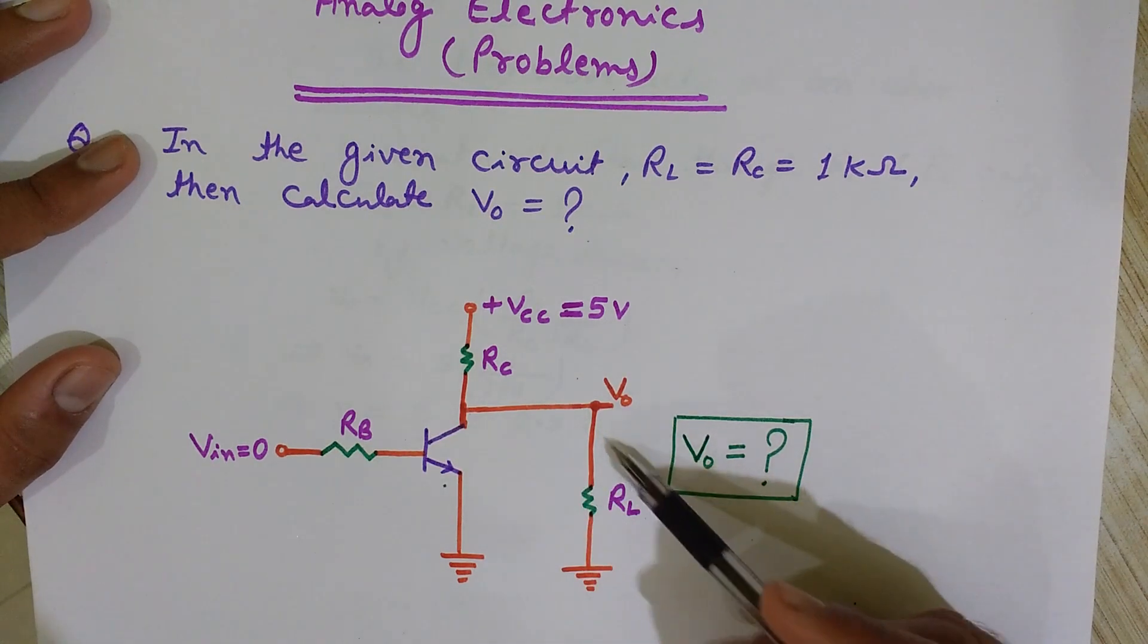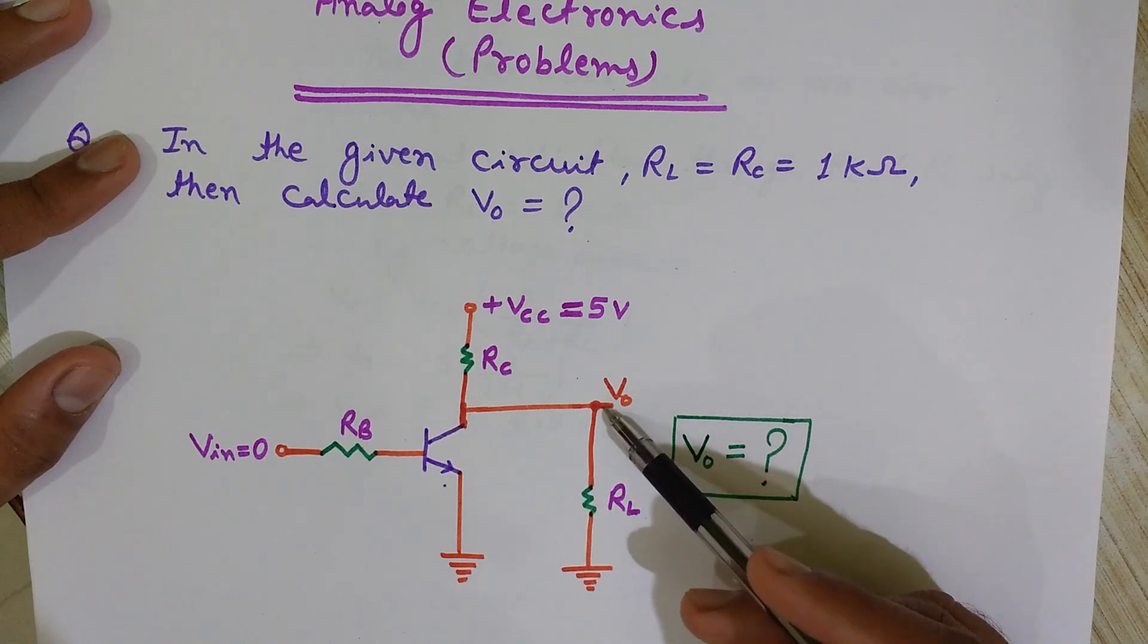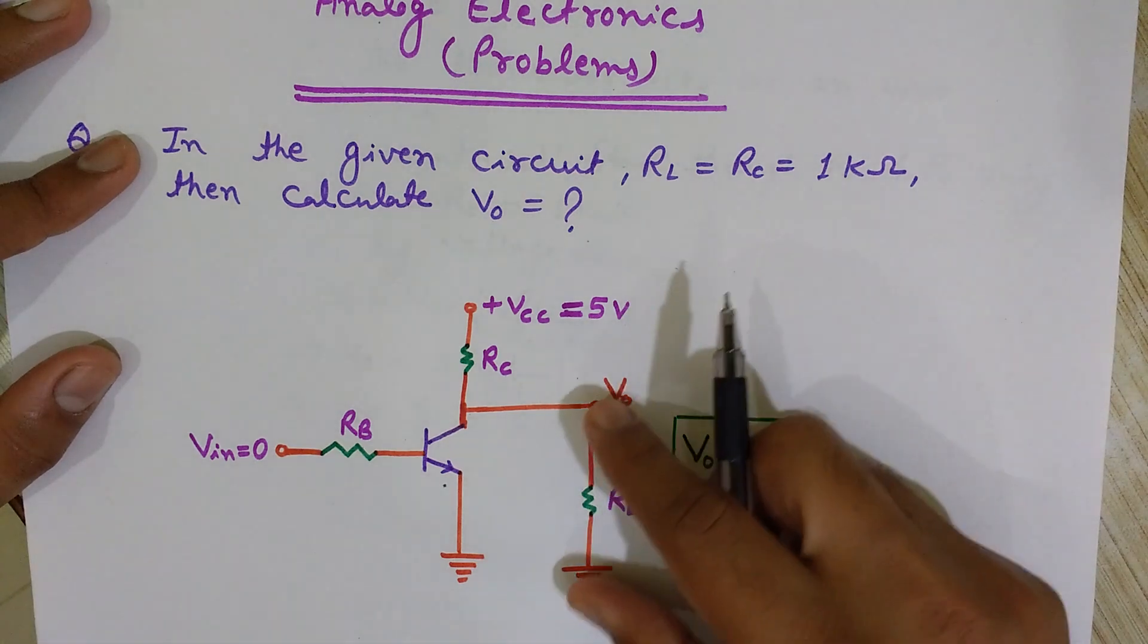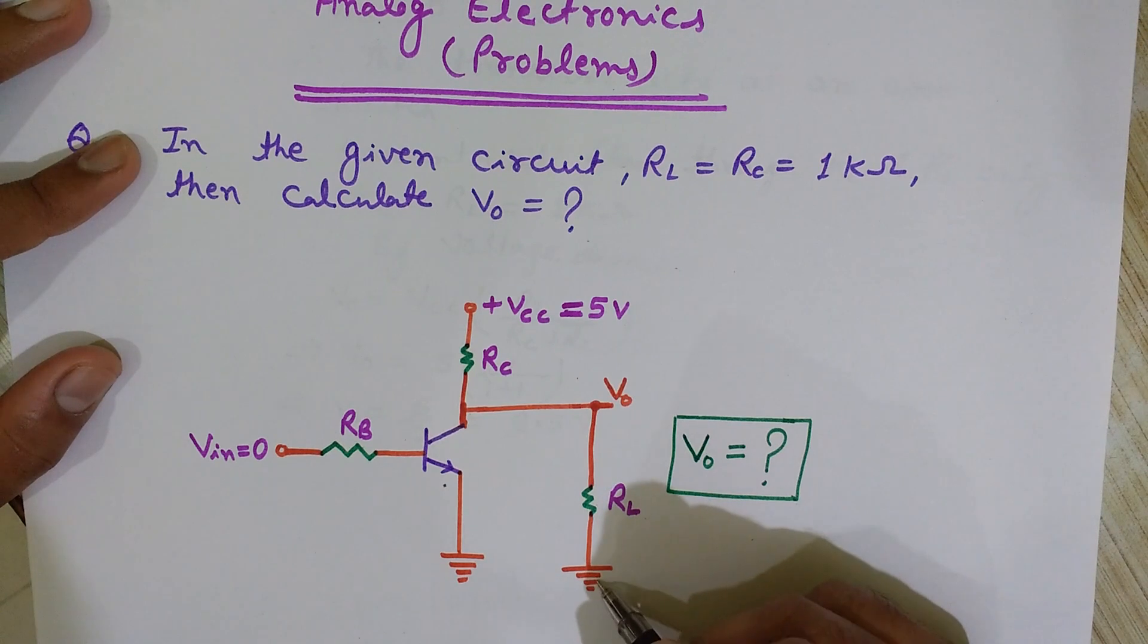So the voltage across this is 2.5. This is 0 volt, this is V0, so the V0 will be the voltage across this, which will be 2.5. Since it is at ground, V0 will be 2.5.